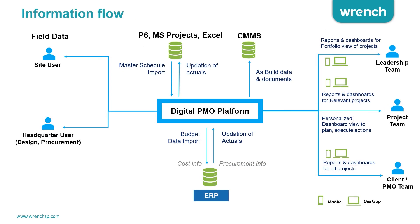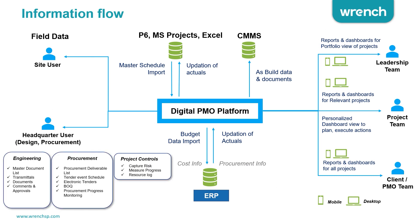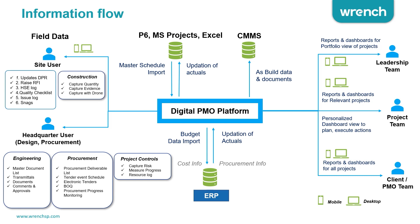In a real-life situation, engineering is done at different centers, procurement is done at the head office, and project controls are done there as well. You have your deliverable list of engineering, the procurement list, and the e-tendering facility capturing procurement status, risk, and progress from project controls. From the site, using field data updates on mobile or tablets, you can capture daily progress reports, RFIs, HSE logs, quality checklist issues, and snags. Construction quantities can also be updated from site, and you can integrate with drones to capture images and quantities. All this is input to the Digital PMO system, which integrates with Primavera P6, MS Project, or Excel as the planning system.